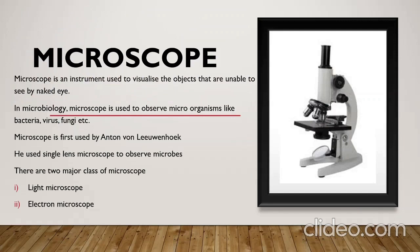Microscope is an instrument used to visualize objects that are unable to see by naked eye. In Microbiology, microscope is used to observe microorganisms like bacteria, virus, fungi, etc. Microscope was first used by Anton van Leeuwenhoek. He used a single lens microscope to observe the microbes.